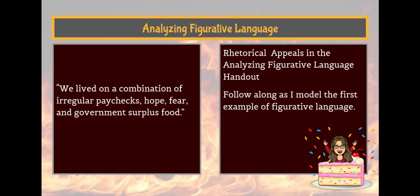At the top it shows the definitions for the three rhetorical appeals. Ethos is the appeal to credibility. A way of thinking of ethos is to relate it to ethics, or the moral principles of the writer. Ethos is the writer's way of establishing trust with his or her reader.